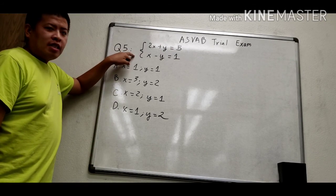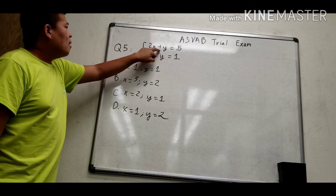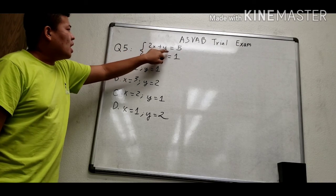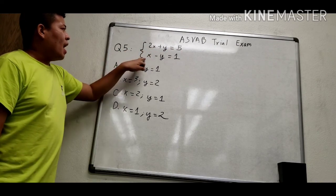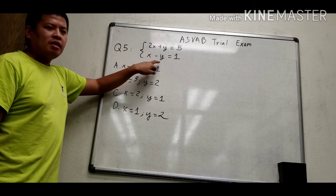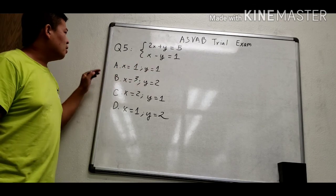We have the system: 2x plus y equals 5, and x minus y equals 1.